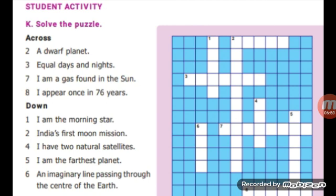Next, I am the morning star: Venus is the morning star. Next, India's first moon mission: Chandrayaan. Next, I have two natural satellites: Mars. Next, I am the farthest planet: Neptune. Next, an imaginary line passing through the center of the Earth. Answer: axis.